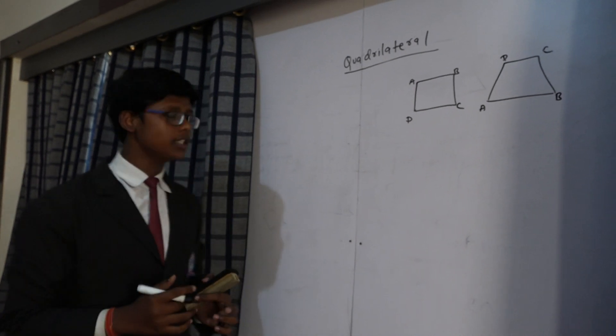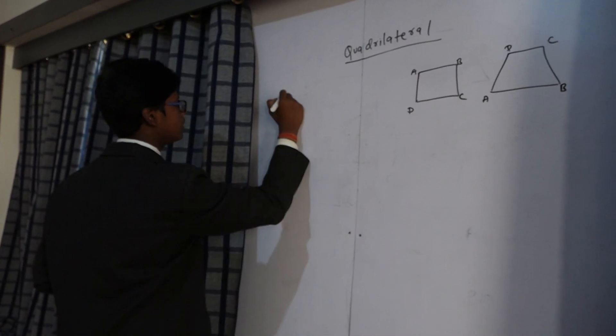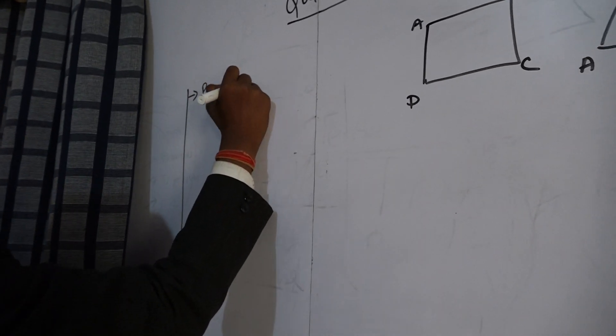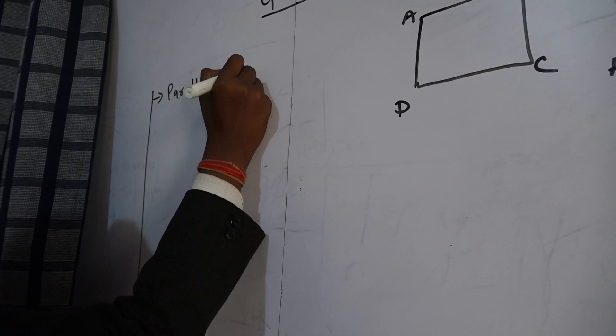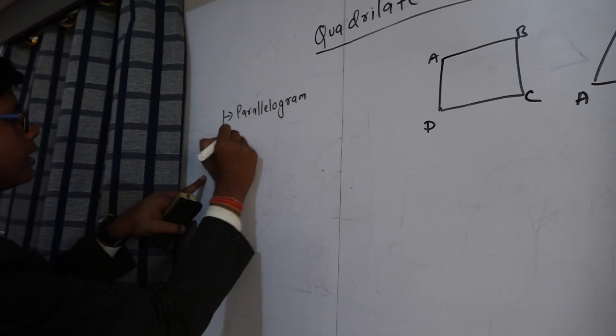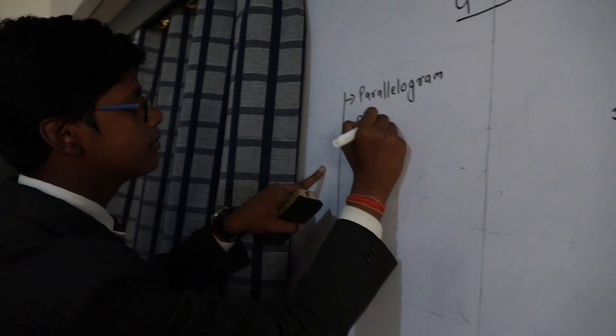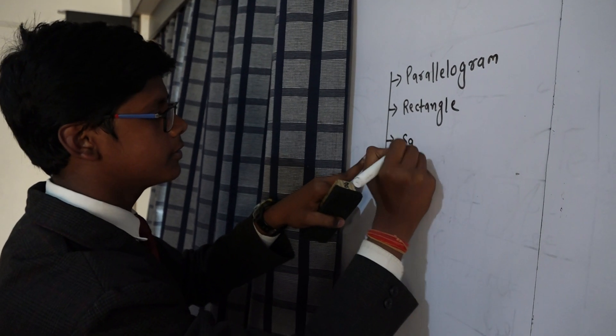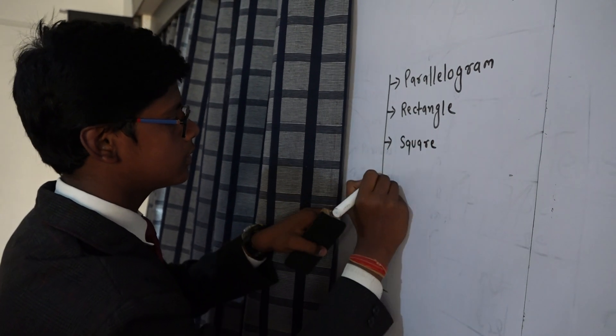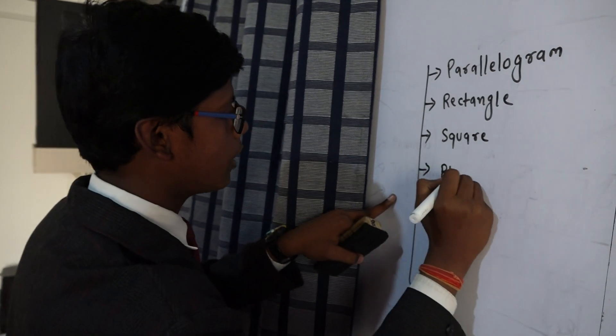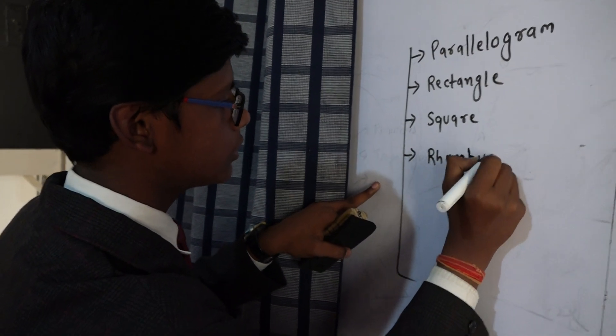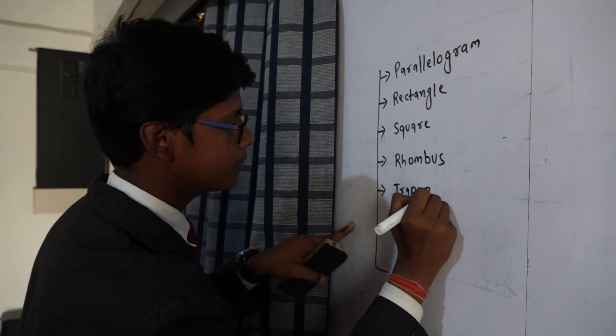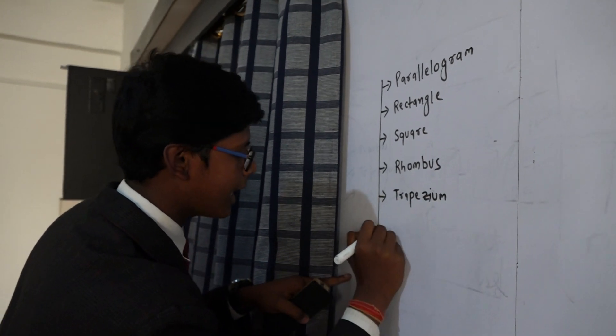Now I am going to explain the different types of quadrilaterals. First one is the parallelogram, next rectangle, next one is the square, then rhombus, trapezium, and kite.